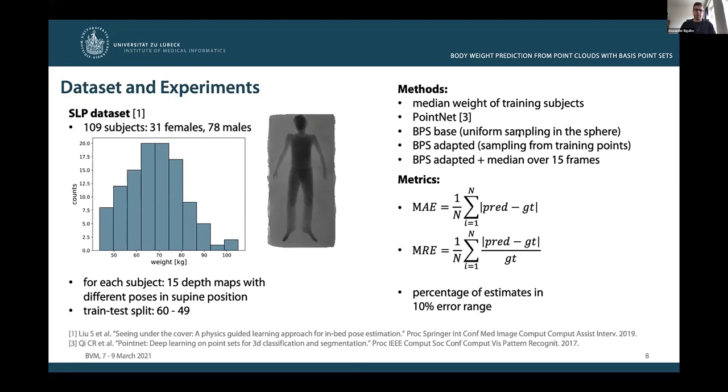Secondly, we consider a basis point set with our proposed adapted sampling scheme, where basis points are sampled from the training points. And finally, we consider the same as BPS adapted, but additionally we take the median over the weight estimates from the 15 different frames showing the same subject.